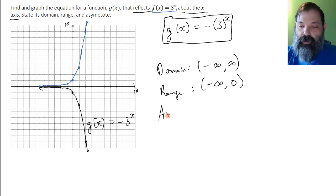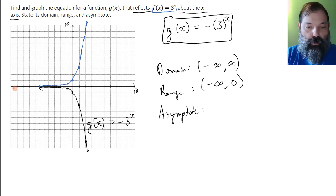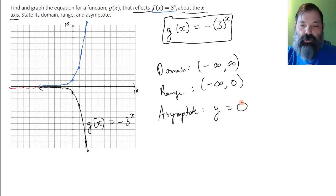And then the asymptote of the curve is this line right here. It's approaching, and that asymptote is the line—I'm sorry, it's not x equals, it's the line y = 0. It's the x-axis, which is the line y = 0.